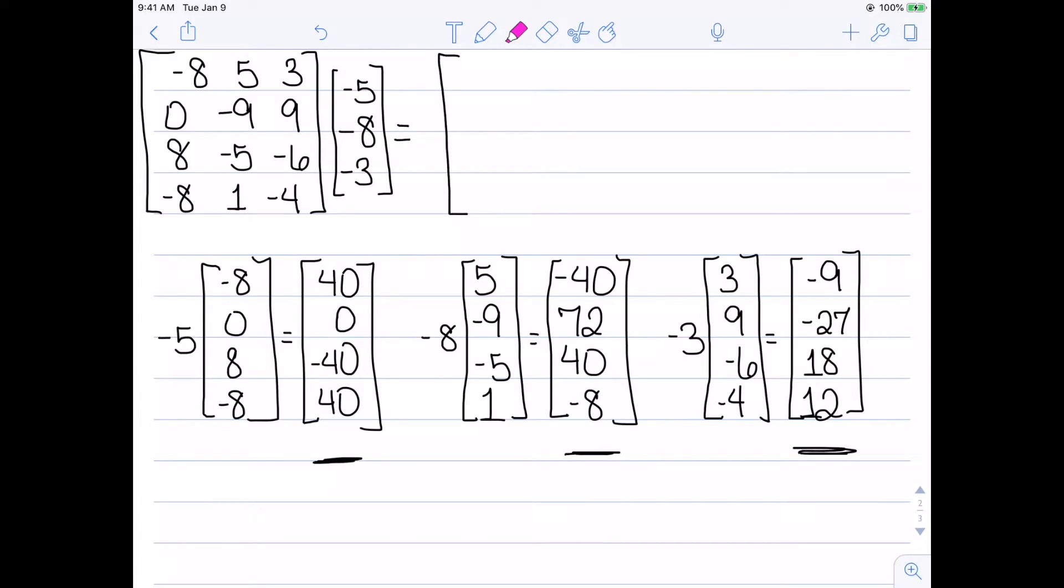So the first entry comes from 40 minus 40 minus 9, which gives me negative 9.